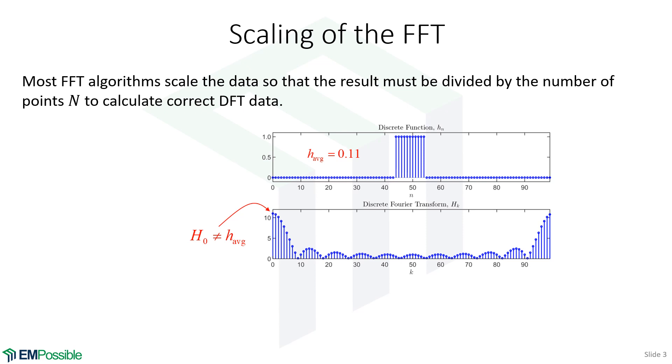It turns out in order to do that, we need to divide by the number of points in that FFT. When we do that, now the zero order has the correct value of 0.11.